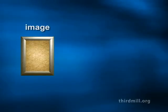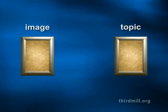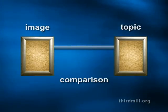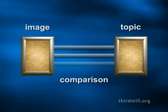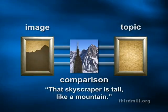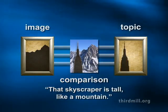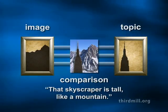Every figure of comparison operates with three main elements: the image, which is the item being compared with the main item in view; the topic, which is the main item of concern; and points of comparison between the two. For instance, think about this simple simile: That skyscraper is tall like a mountain. In this sentence, the image is a mountain — it's the item being compared to the main concern. The main concern or topic is that skyscraper, the building in view. And the explicit point of comparison is that both are tall.